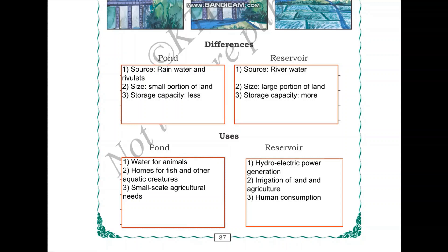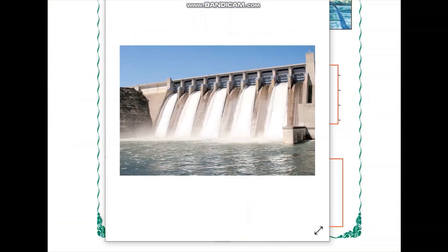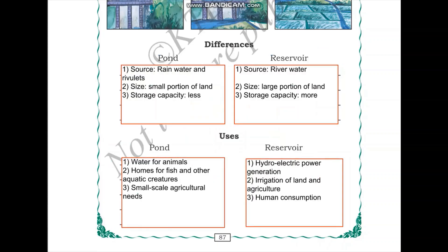Next, let us look at the uses of reservoir water. Reservoirs have the capacity for hydroelectric power generation — the great force of water coming down can be used to generate hydroelectric power. Reservoirs can also be used for irrigation of land and agriculture, and can supply water for human consumption in times of water scarcity.